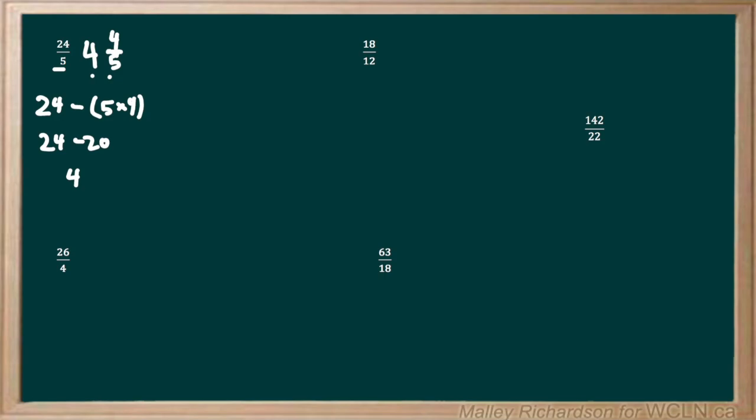You can check your answer by converting it back into its improper fraction. Take 5 times 4, which is 20, and add 4 to get 24, giving us 24 over 5, which is the same as our original question. So we know that this answer is right.